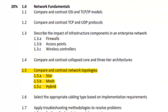Now we're moving on to section 1.5, which says compare and contrast network topologies. We need to be able to explain what is a star network topology, mesh network topology, and hybrid network topology.